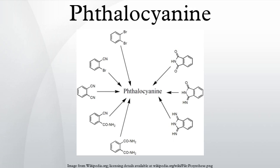Many derivatives of the parent phthalocyanine are known, where either carbon atoms of the macrocycle are exchanged for nitrogen atoms, or where the hydrogen atoms of the ring are substituted by functional groups like halogens, hydroxy, amino, alkyl, aryl, alkoxy, nitro, etc.